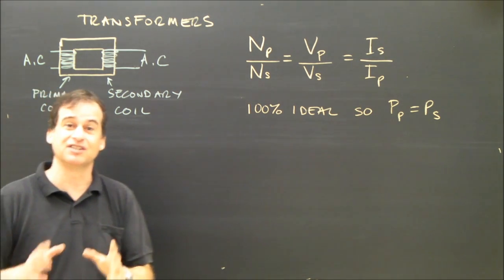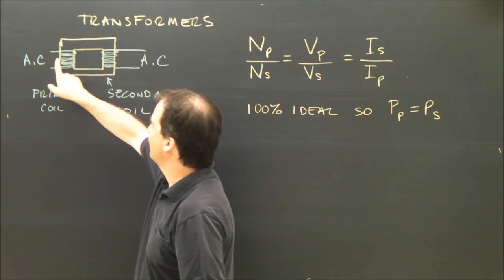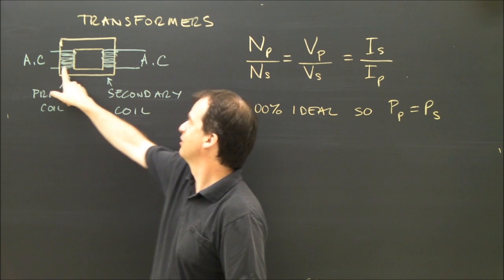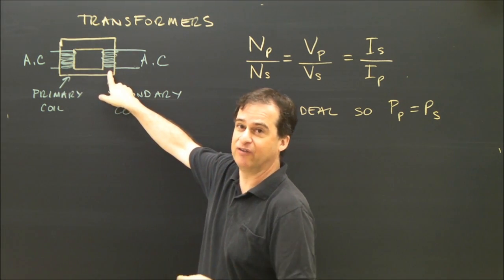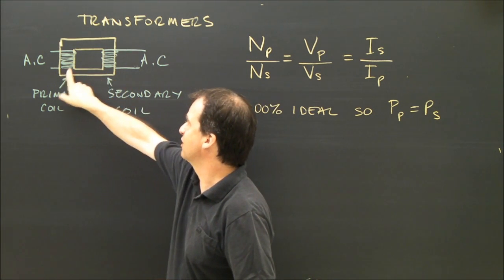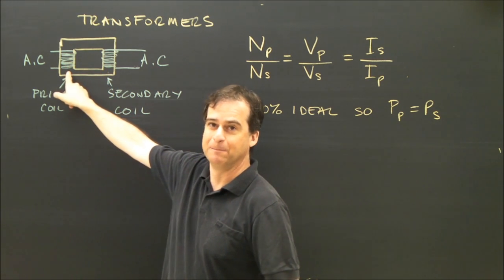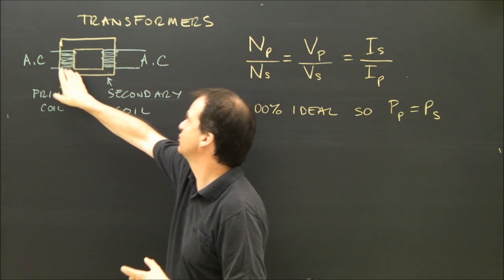And the equation that governs this is really simple. If I have 100 loops on this side and 200 loops of wire on this side, then the voltage on this side, the ratio is 2 to 1, then the voltage will be 2 to 1. If I have 20 volts here, I'll end up with 40 volts over there.